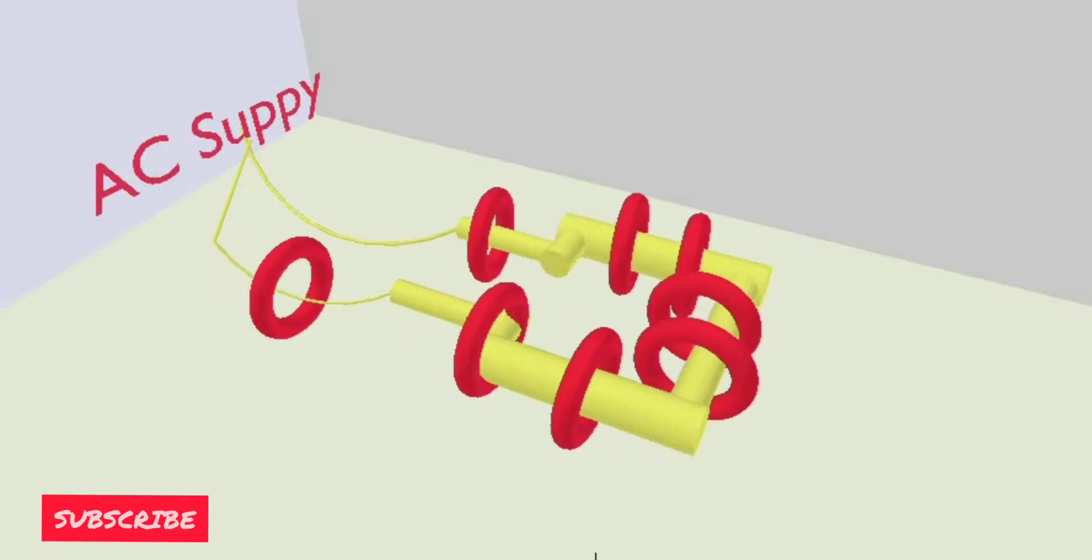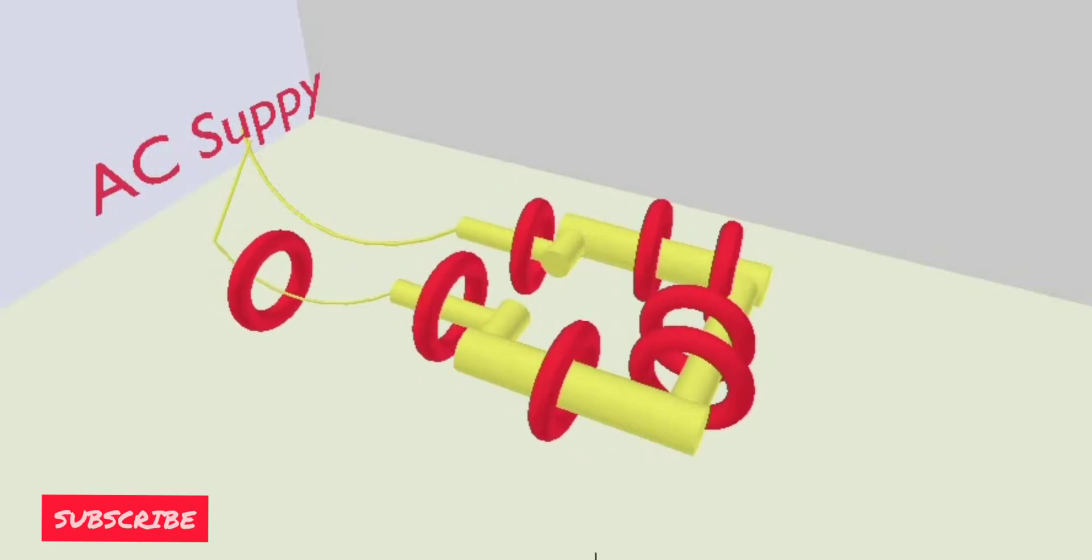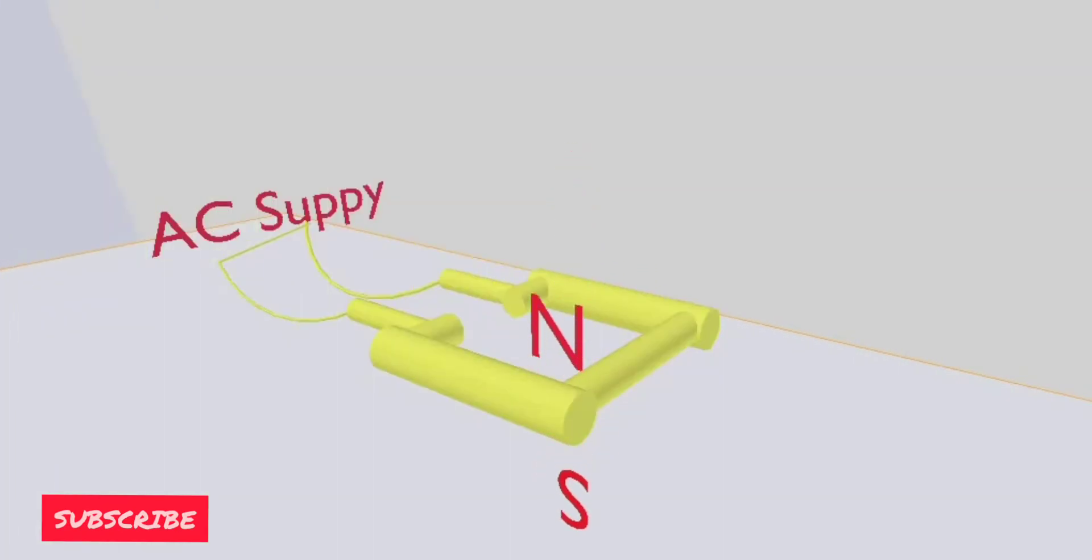Now I am giving an AC supply to a coil. As it is alternating current, the direction of current will move forward and backward continuously and magnetism is produced inside the coil. Because the direction of current is changing continuously, the magnetic poles will change continuously.